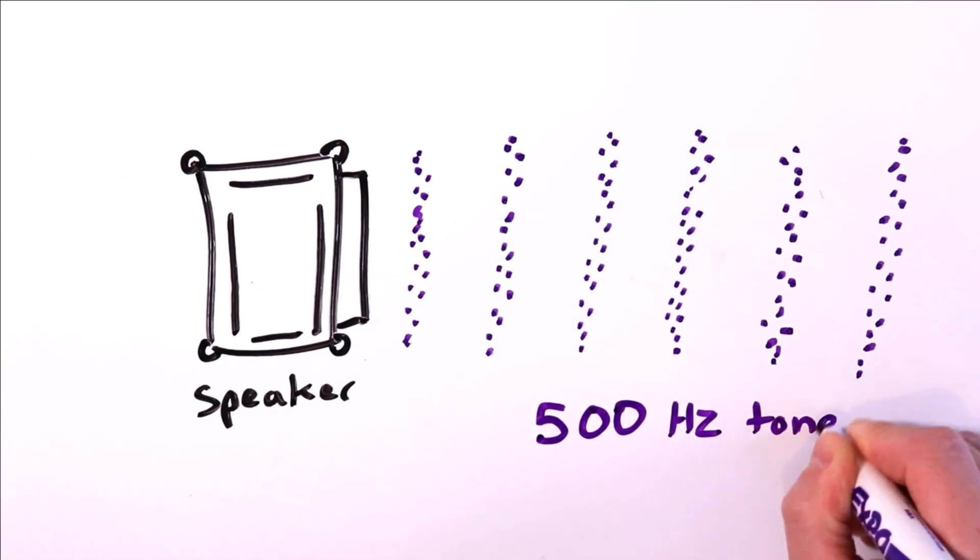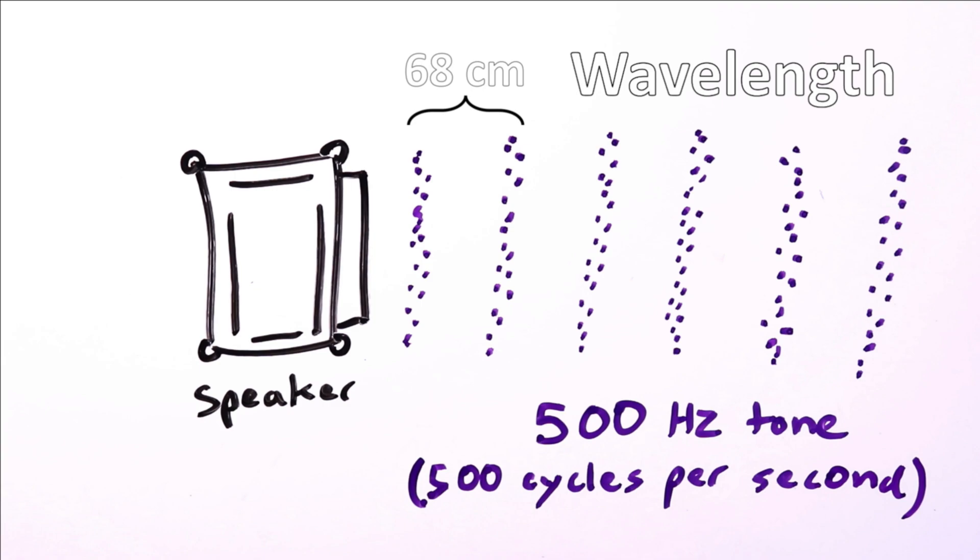The speaker produced a 500 hertz tone, meaning that if everyone is at rest, 500 wave cycles pass the observer every second. 500 hertz is the tone's frequency. There's a distance of about 68 centimeters between each wave. This distance is called the wavelength.